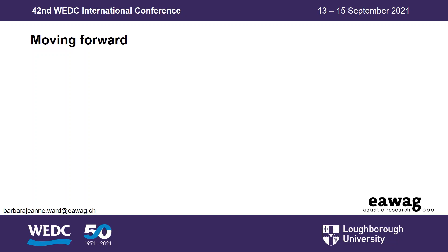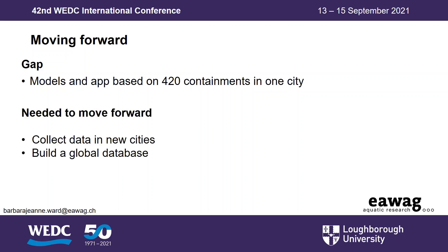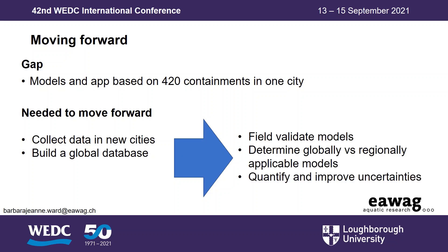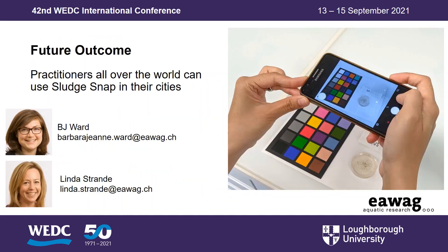The proof-of-concept SludgeSnap app and the models behind it are promising, but they are based on 420 containments in one city. In order to move forward, we need to collect data in new cities and use it to build a global database of sludge characteristics. Based on that data, we can understand what models are globally or locally applicable, and better quantify prediction uncertainties when the models are used in new cities. We also plan to streamline the data processing in the app to make it simpler and faster for users in the field.